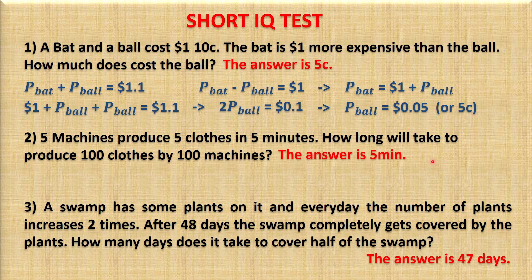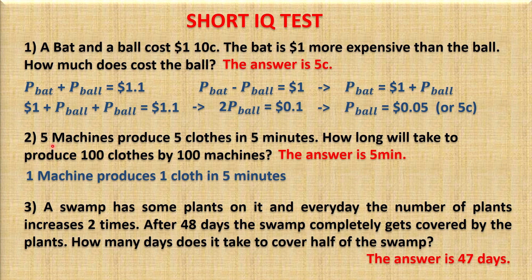Now let's look at the second question. It's easier to first find how many clothes one machine produces. Since 5 machines produce 5 clothes in 5 minutes, then 1 machine produces 1 item in 5 minutes. Therefore, 100 machines will also produce 100 clothes in 5 minutes — the answer is 5 minutes.